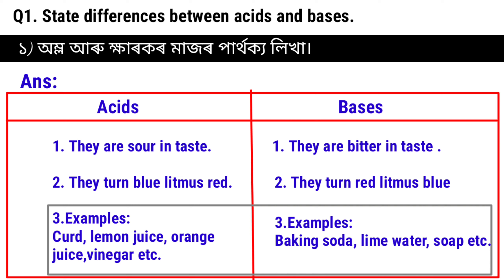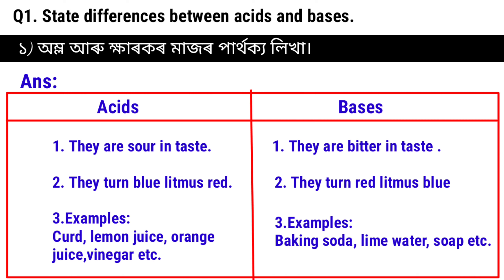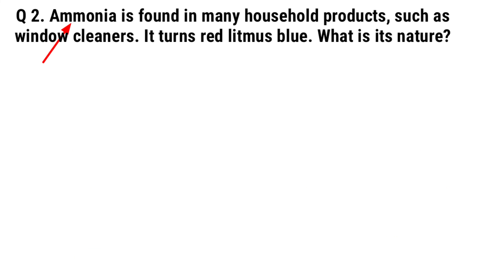Some examples of acids are: lemon juice, carrot juice, and vinegar. Some examples of bases are: baking soda, lime water, and soap. Next, question number 2: Ammonia is found in many household products such as window cleaners.